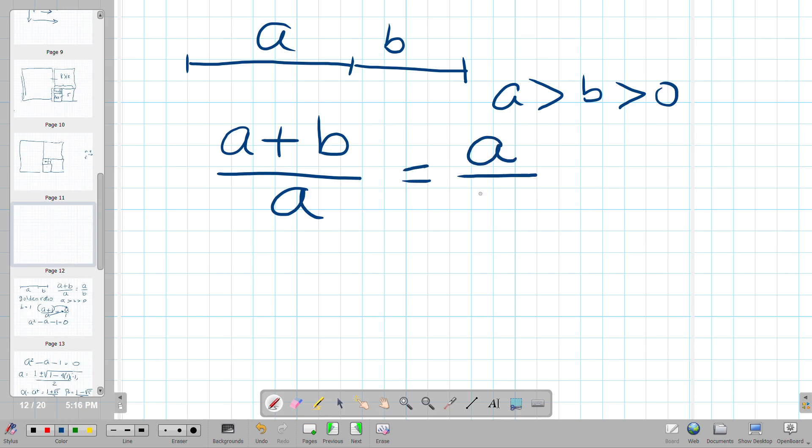A plus B over A is equal to A over B. Now generally, a good assumption to start with is to say pick B equals one, and then this ratio is in terms of multiples of one side.